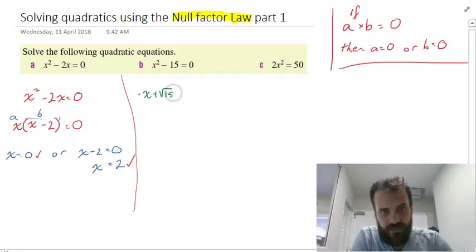So we can rewrite x² - 15 as (x + √15)(x - √15) = 0. So difference of two squares. 15 is not a square number, but we can use square roots to make it sort of look like a square number.